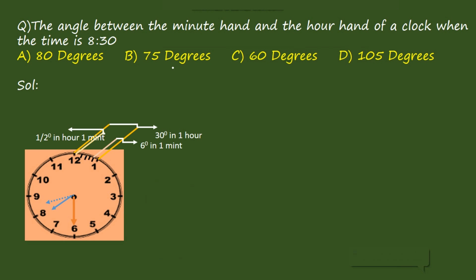Next question: find the angle between the minute hand and hour hand of the clock when the time is 8:30. I will solve it by both theoretical method and formula method. The time is 8:30. Solving by theoretical method — in the clock at 8:30, the shorter hand is the hour hand and the longer one is the minute hand. Angle from 6 to 7 is 30 degrees, and from 7 to 8 is also 30 degrees, so the angle from 6 to 8 is 30 plus 30, which equals 60 degrees.